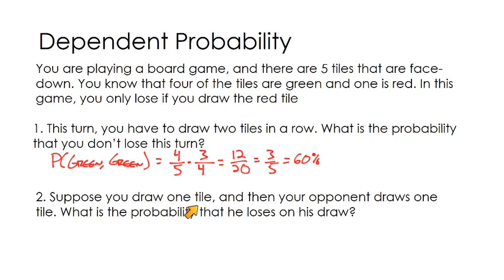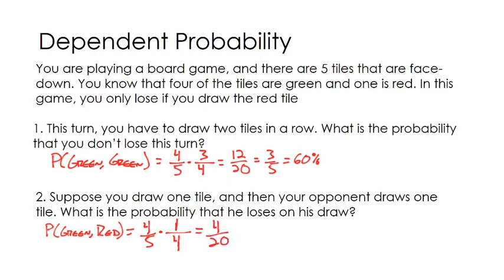Suppose you draw one tile, then your opponent draws one tile on his turn. What's the probability that he loses on his draw? We need the probability that you draw green and then he draws red. Your first draw: 4 out of 5 green tiles. For his draw, there are now 4 tiles left, and drawing a green didn't affect the number of red tiles — there's still 1 red. So 1 out of 4. Multiply: 4/5 × 1/4 = 4/20 = 1/5, or 20%. The main idea is identifying when events are dependent and tweaking your multiplication rule accordingly — P(B|A) accounts for how the second event is affected by the first.